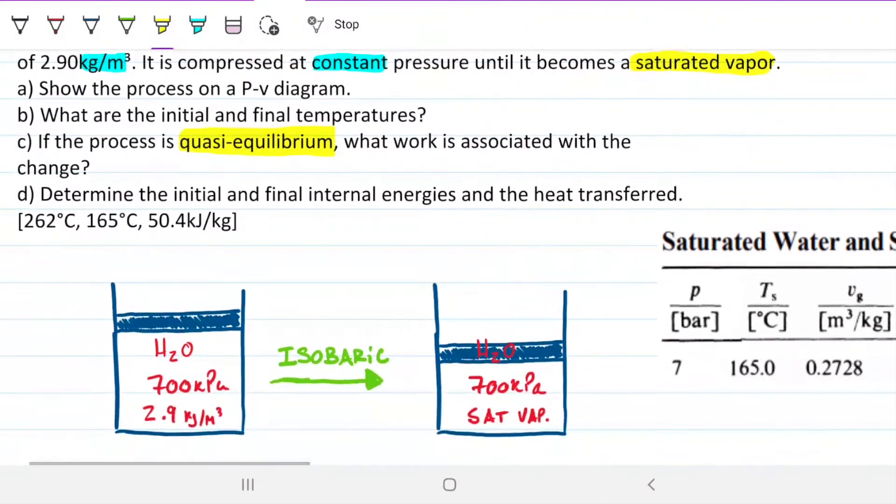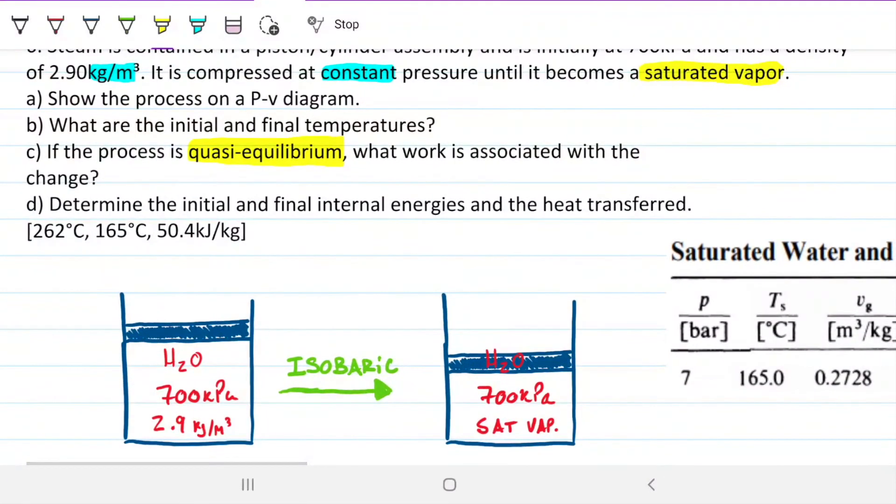We have this set of information. We know it's 700 kilopascals initially, and because it's an isobaric process, then the pressure here also has to be 700 kilopascals. The other thing we know is that this is 2.9 kilograms per meter cubed, an indication that we can find specific volume just by inverting that value. And we know the end state is a saturated vapor.